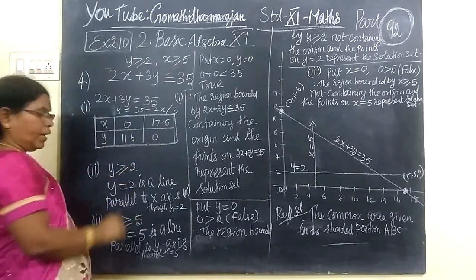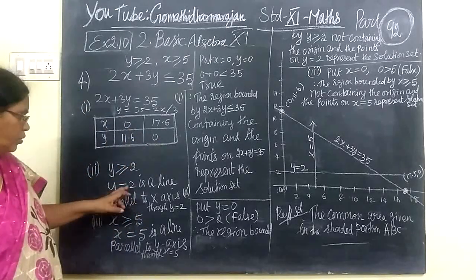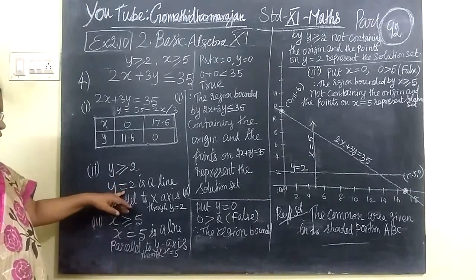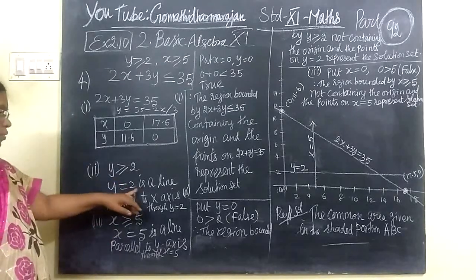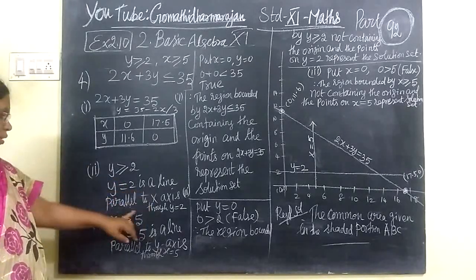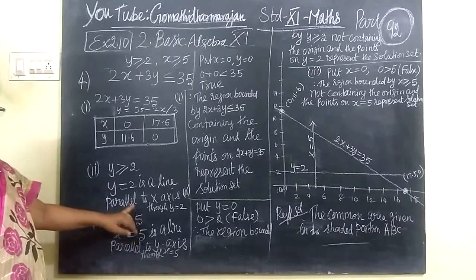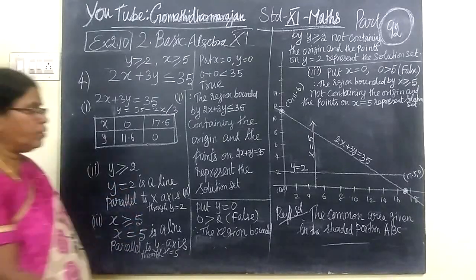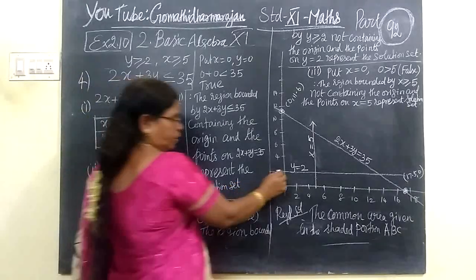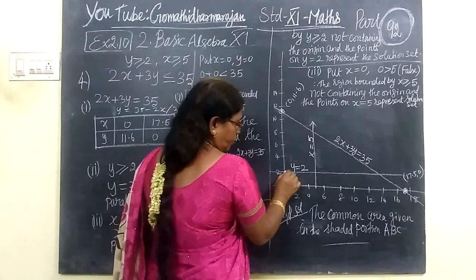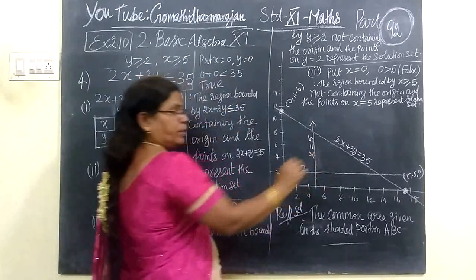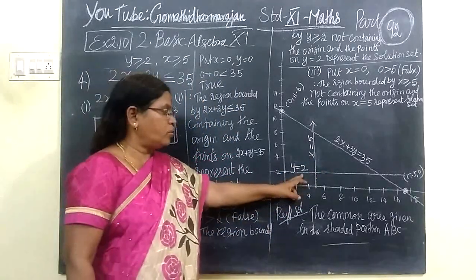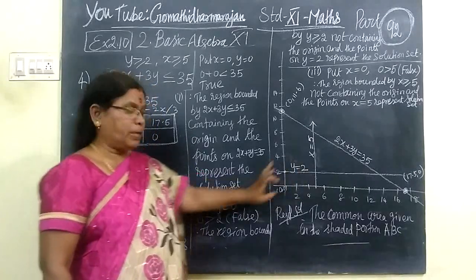Then Y greater than or equal to 2. Y equal to 2 is a straight line parallel to the X axis, at a distance of 2.